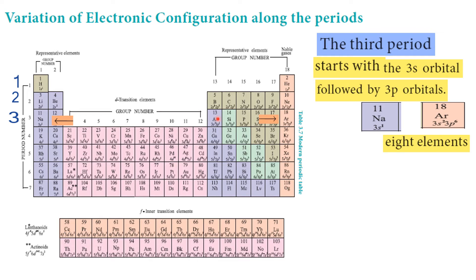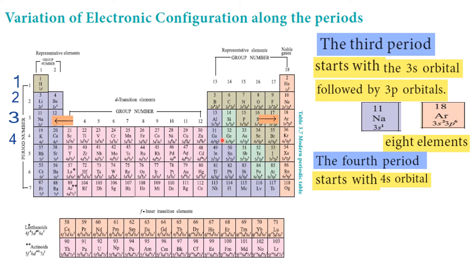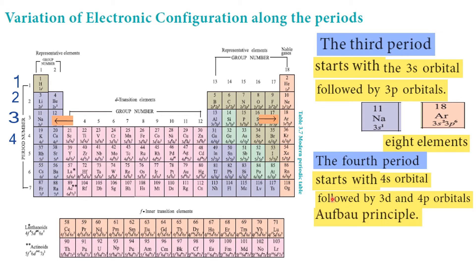The fourth period starts with 4s1. According to the Aufbau principle, after 4s, electrons go to 3d and then to 4p. So the fourth period is followed by 3d and 4p orbitals. The first element is potassium and the period ends with krypton, where the configuration goes from ns1 to ns2 np6.